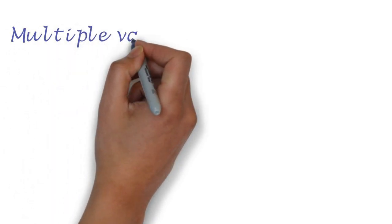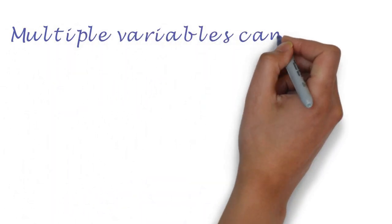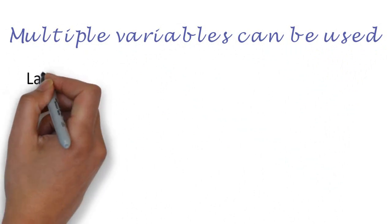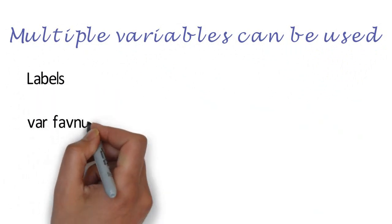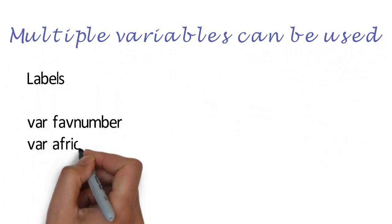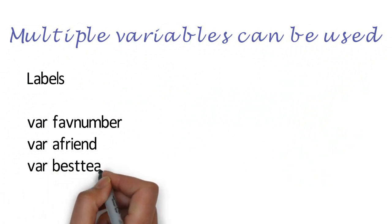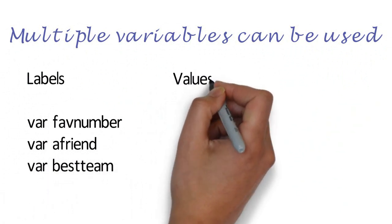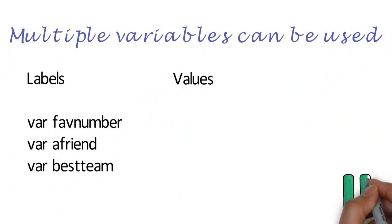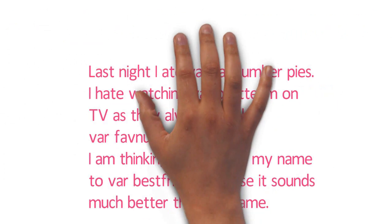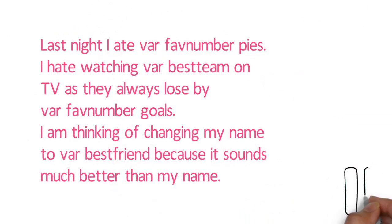Multiple variables can also be used within the same algorithm or program. Write three variables with the following labels and put in your own chosen values. Don't get too hung up on which friend, just choose one quickly. Now use your variables to read this passage to the person next to you.